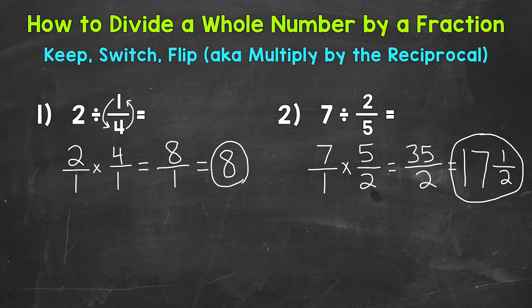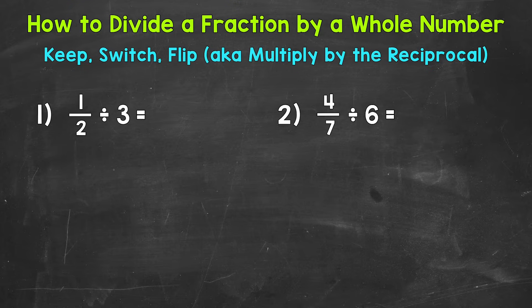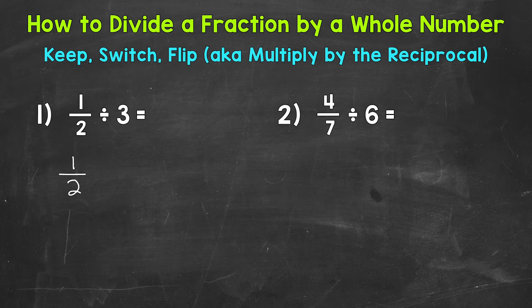So that's how we divide a whole number by a fraction. Let's move on to dividing fractions by whole numbers. Here are our examples. Let's jump into number one where we have one half divided by three — we are taking one half and dividing it into three equal groups. Let's rewrite the problem using keep, switch, flip. We always keep the first fraction, so keep one half. Then we switch to multiplication, the inverse of division, and since we switched, we need to flip the second number.